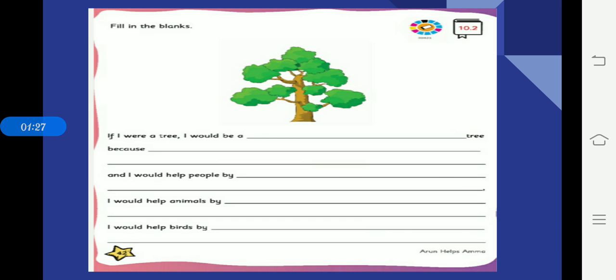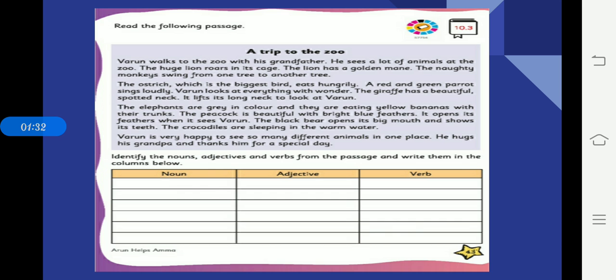Then move on to next 10.3 exercise that is in page number 43. A trip to the zoo. So here it is given one passage, in this passage you have to identify nouns, adjectives and verbs.